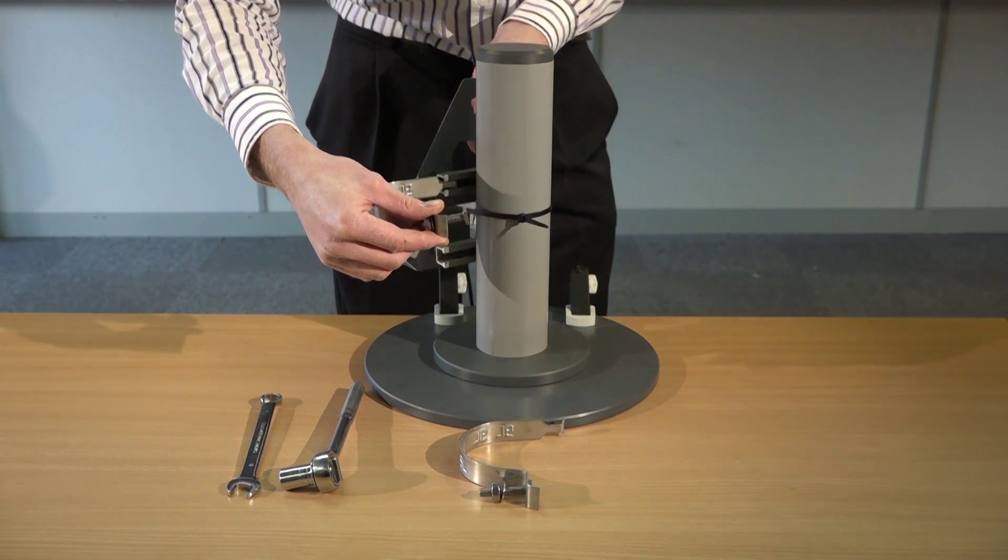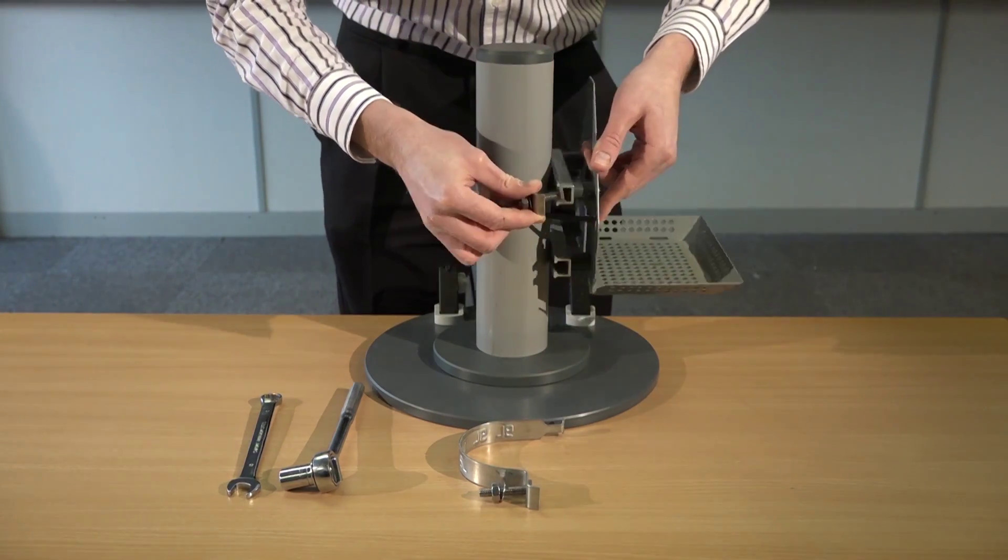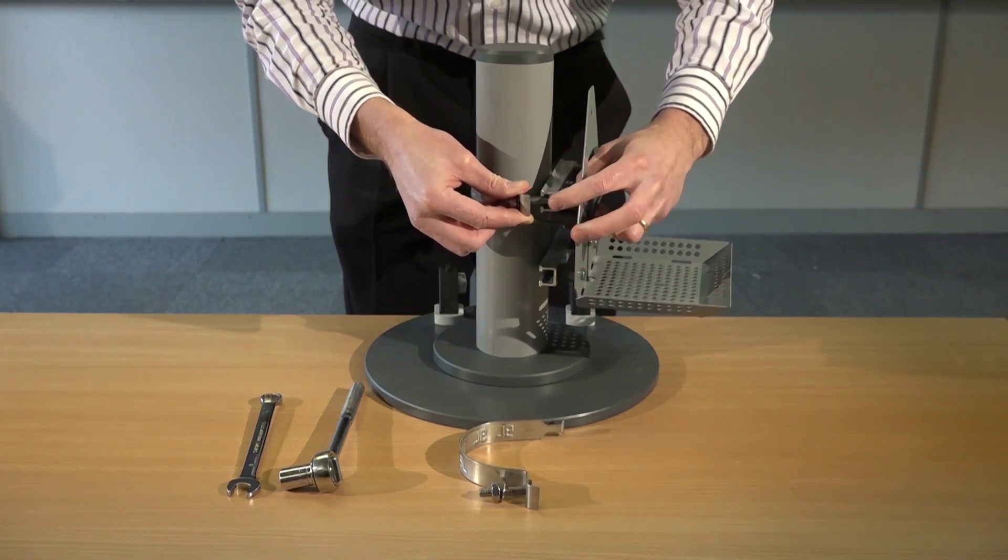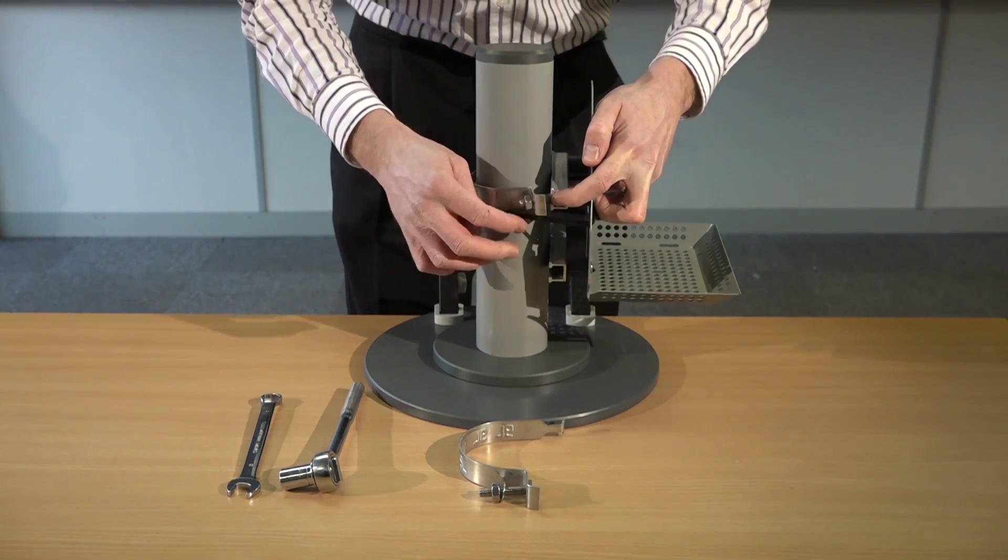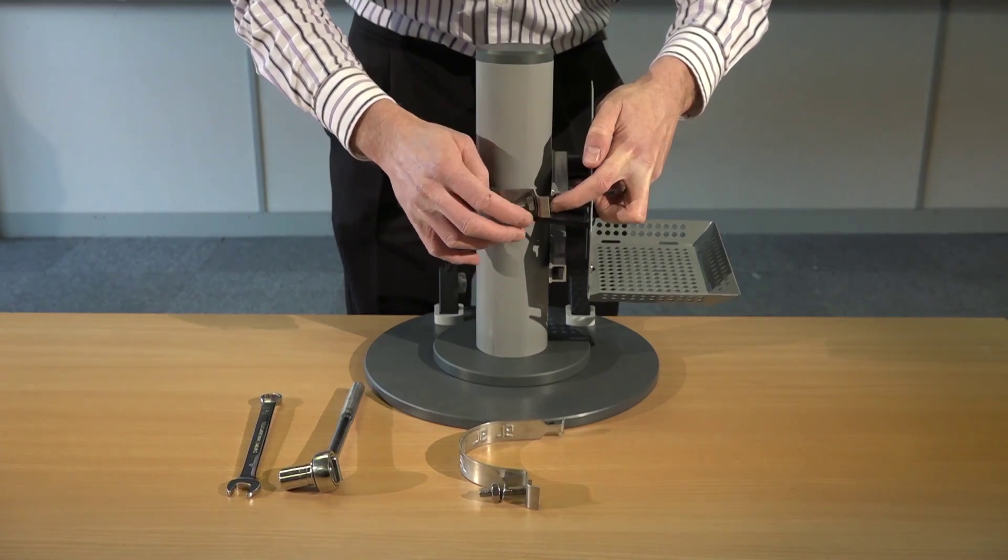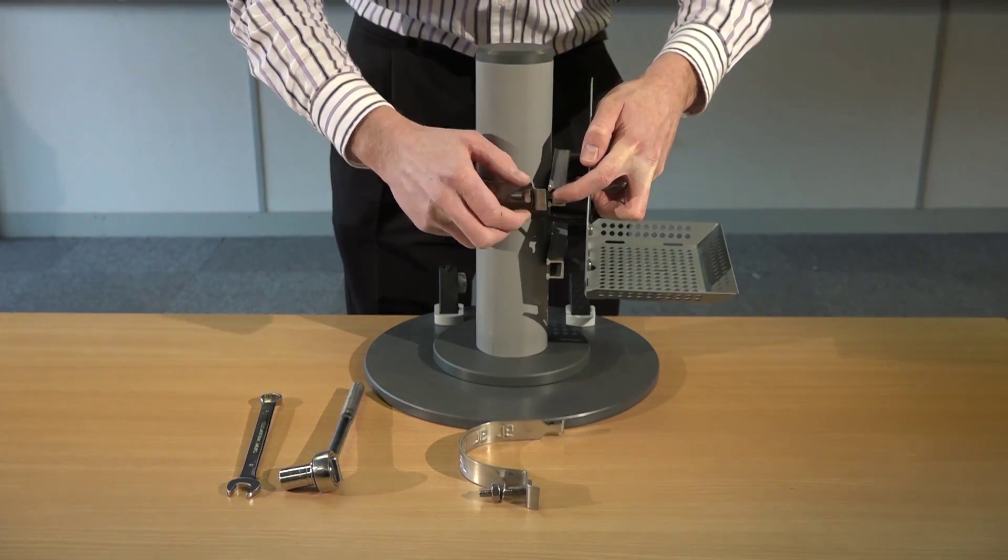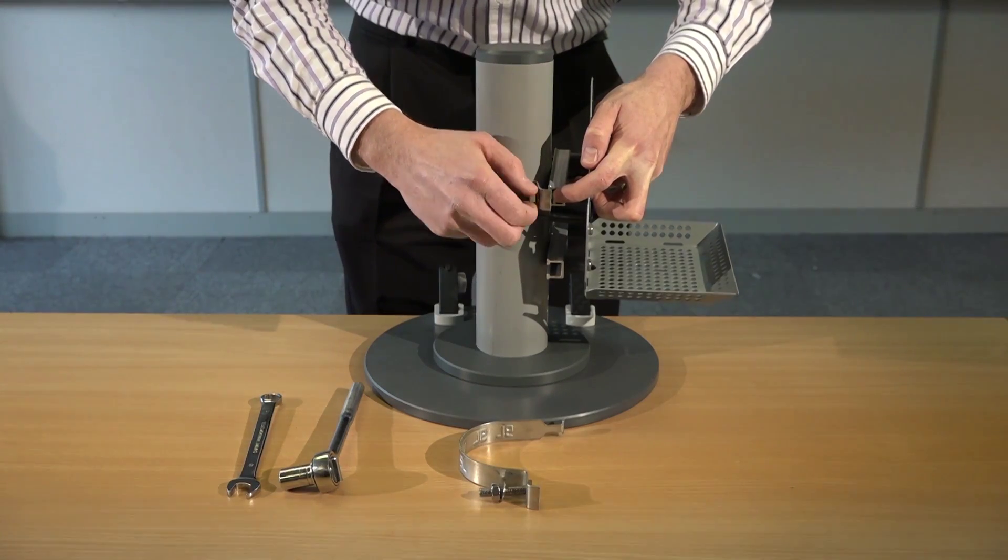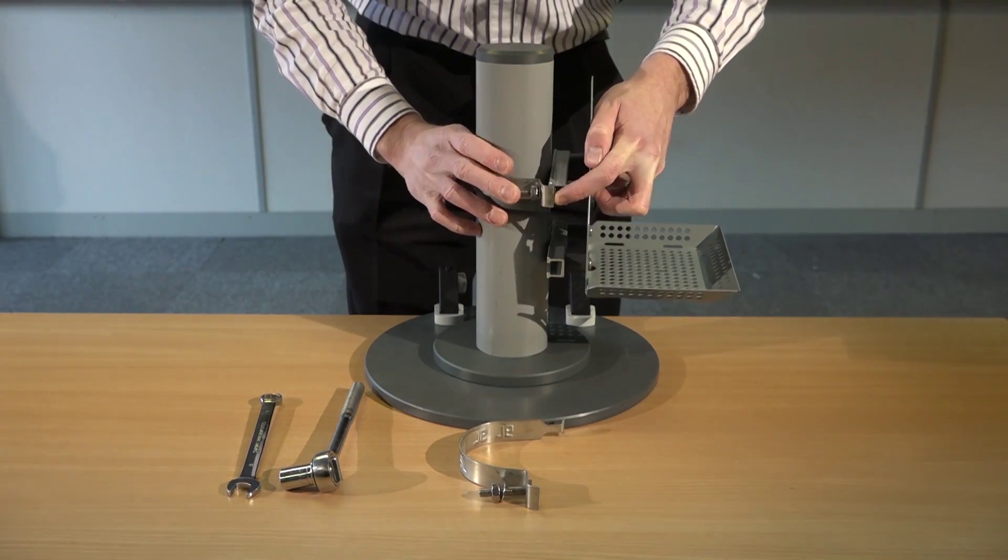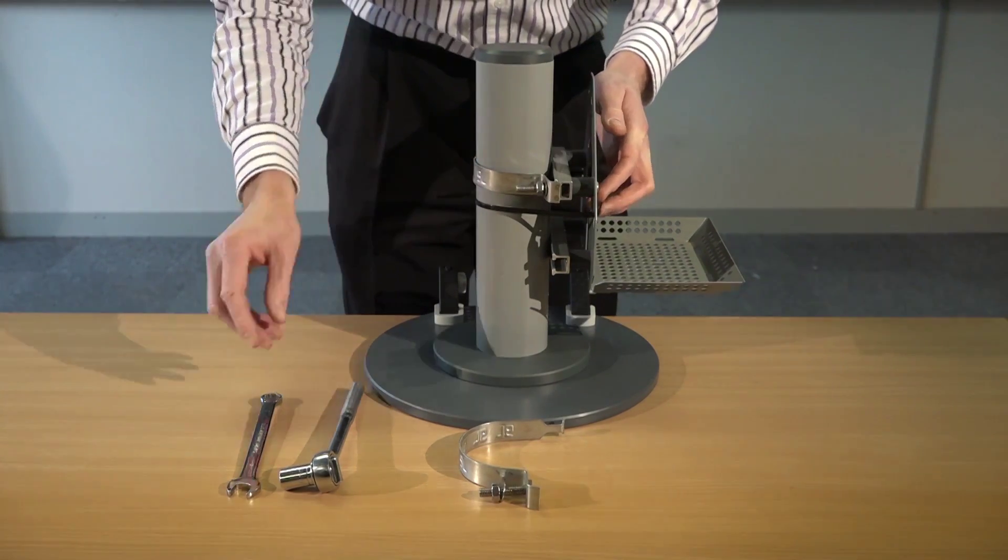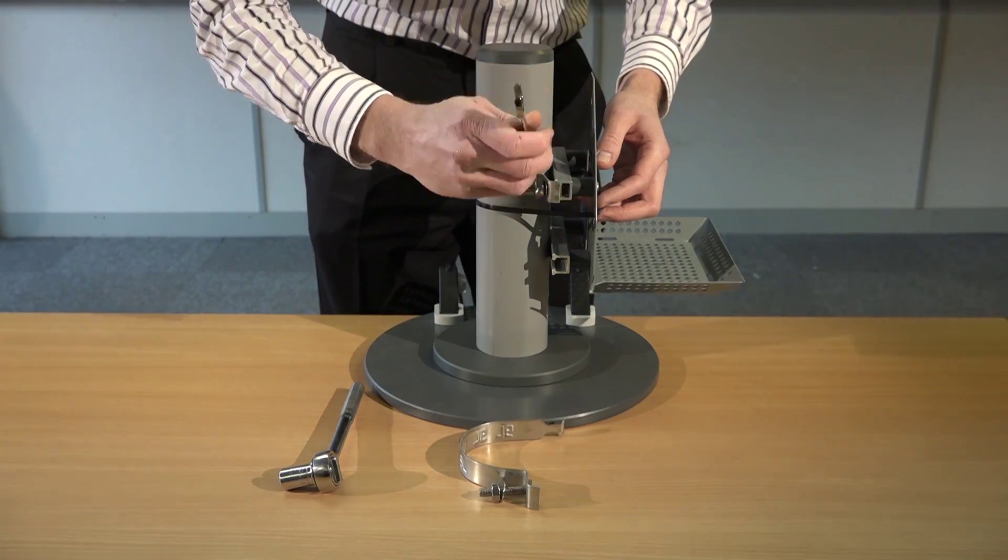One end slides into the fixing channel, around the post. The bolt then secures into the other side of the fixing channel. Tighten by hand. Making sure it's in the desired position. And then finish off with a 13mm spanner.